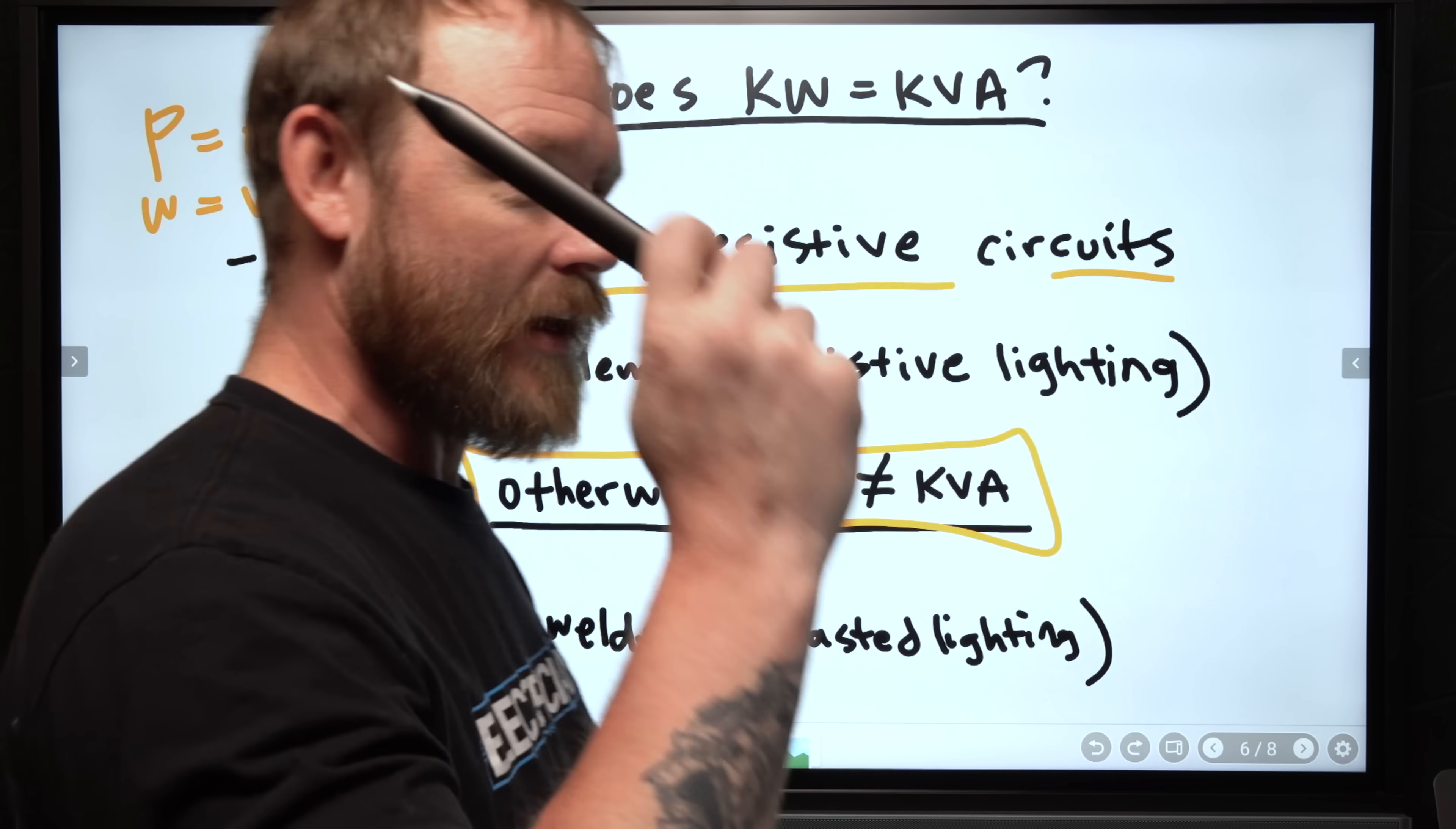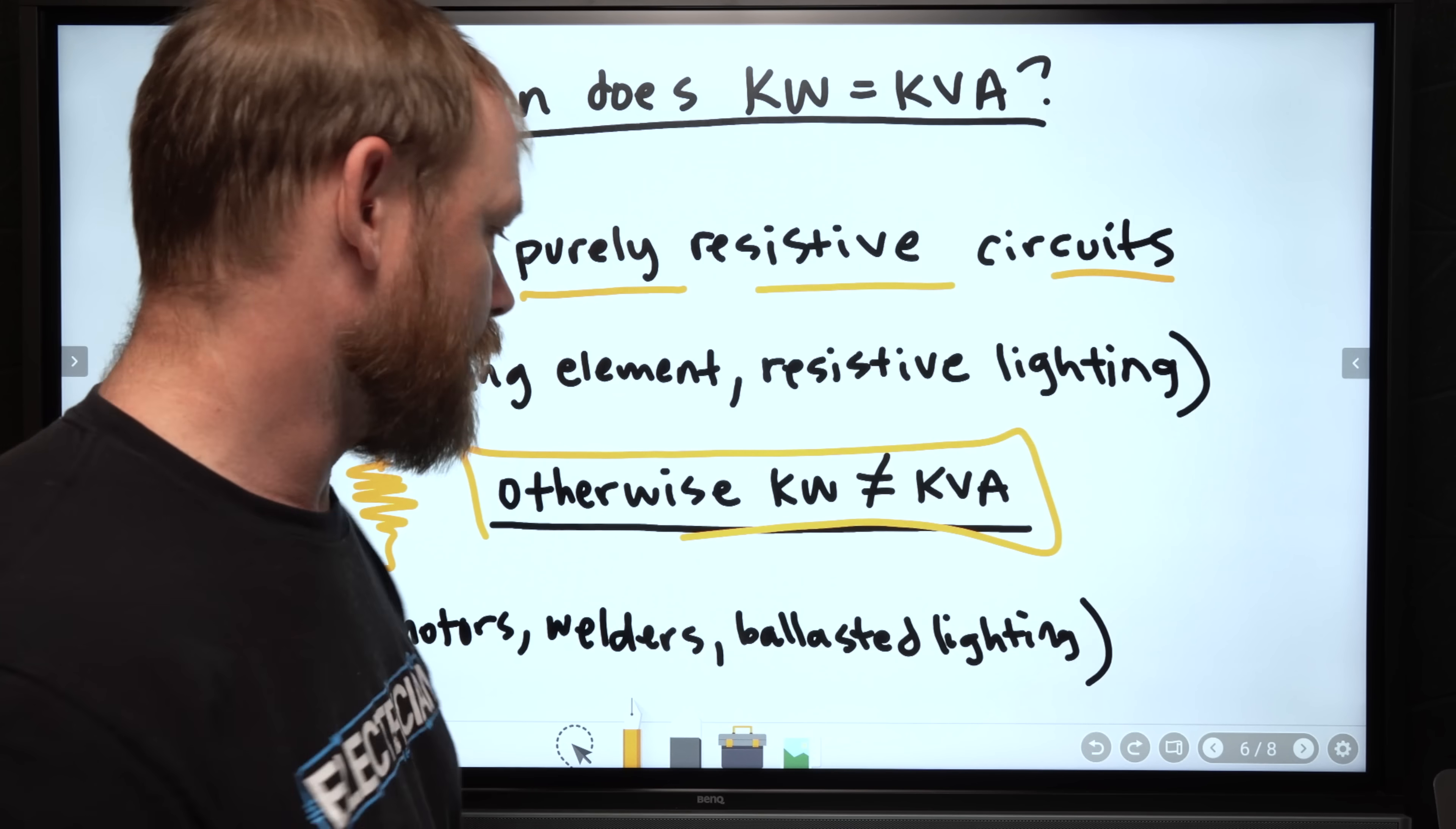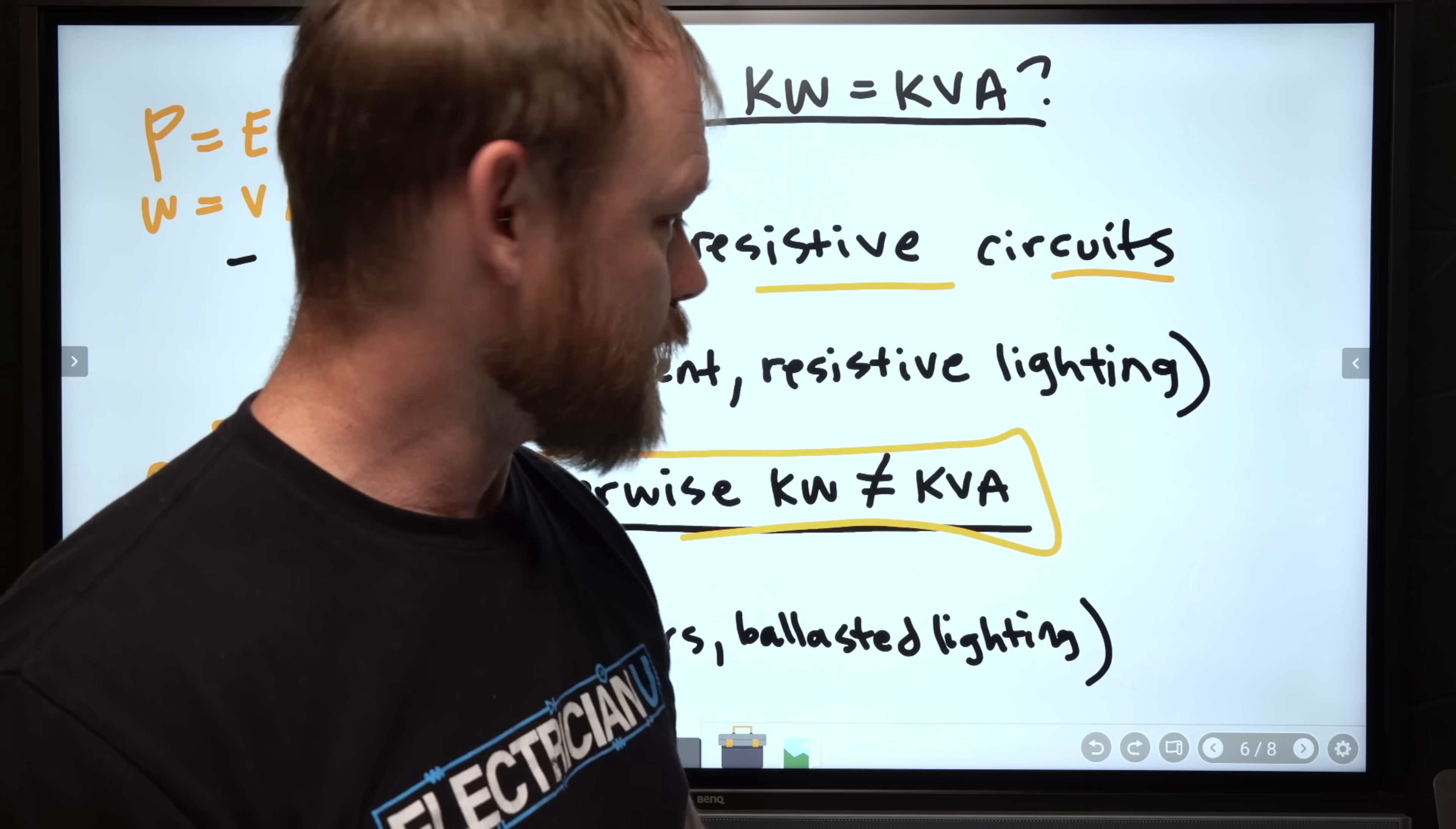But everything else, otherwise every single other thing in the world, any lights that have ballasts, so like compact fluorescent, fluorescent, LEDs, every kind of bulb, high pressure sodium, mercury vapor, all of those are going to be some kind of ballasted light which is going to have a reactive component to it. So your KW is not going to equal your KVA. If you've got a welder, motors, transformers, any of that, the rest of the industry, basically.